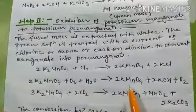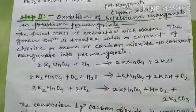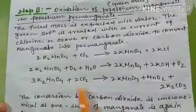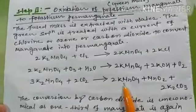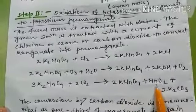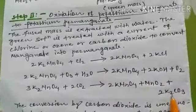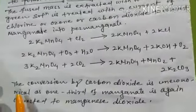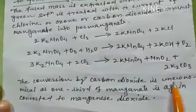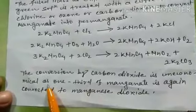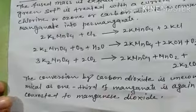When potassium manganate is treated with carbon dioxide, potassium permanganate and potassium carbonate are formed. However, the conversion by carbon dioxide is uneconomical, as one third of the manganate is again converted back to manganese dioxide.